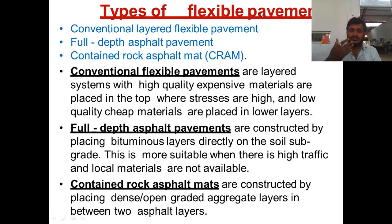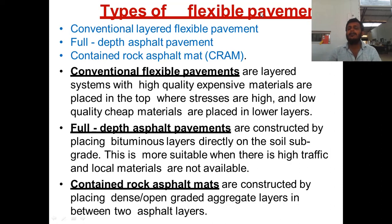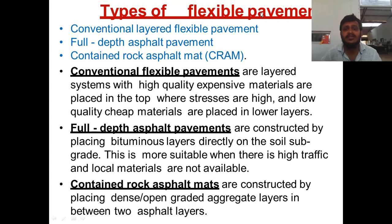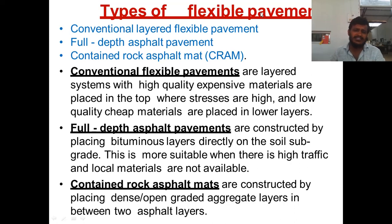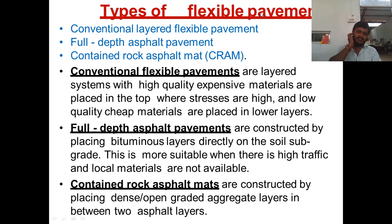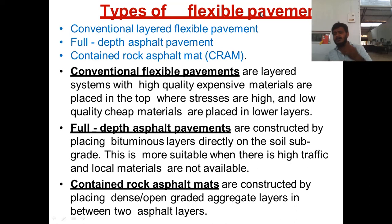Types of flexible pavement: there are three types. First is conventional layered flexible pavement — these are layered systems where high quality, expensive materials are placed on top where stresses are high, and low quality or cheap materials are placed in lower layers where stress is less. Second is full depth asphalt pavement, constructed by placing bituminous layers directly over the soil subgrade; this is more suitable when there is high traffic and local materials are not available.